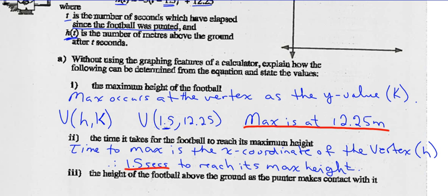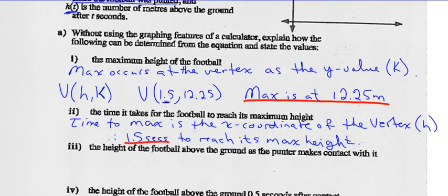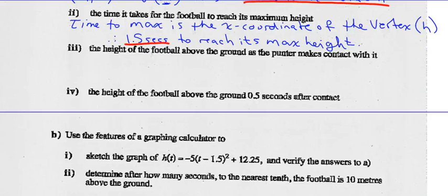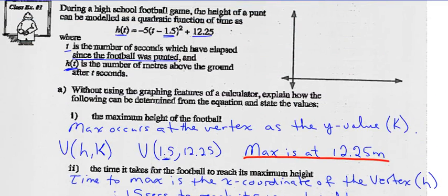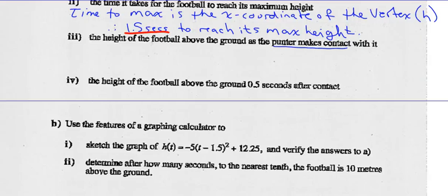Part 3. What is the height of the football above the ground as the punter makes contact with it? What's the height as the punter makes contact with it? Well, that height occurs as the punter makes contact with it. That's time 0. If you go back and look at this definition, t is the number of seconds which have elapsed since the football was punted. So as the punter makes contact with the football, this is really time 0. Therefore, we're going to find out what the y-intercept is. So we are looking for the y-intercept.